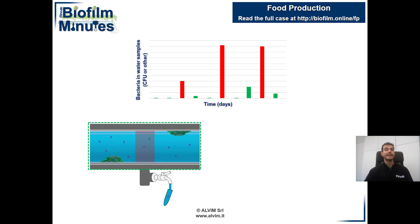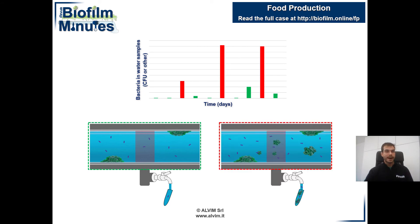The presence of biofilm does not necessarily cause an increase of free-floating bacteria, so liquid sampling and analysis cannot inform about biofilm presence. But when parts of biofilm detach and float away, these can lead to high results in bacterial count. This exemplifies how liquid sampling and analysis cannot provide a representative indication of the real microbial risk.